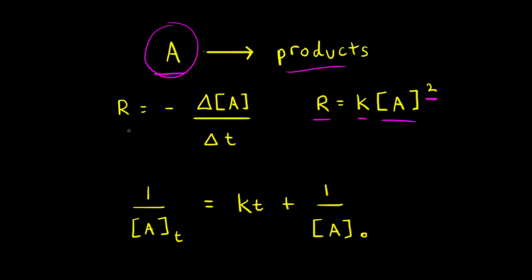We can also write that the rate of the reaction is equal to the negative of the change in the concentration of A over the change in time. If we set these two ways of writing the rate of reaction equal to each other and use some calculus, including the concept of integration, we'll arrive at the integrated rate law for a second order reaction.